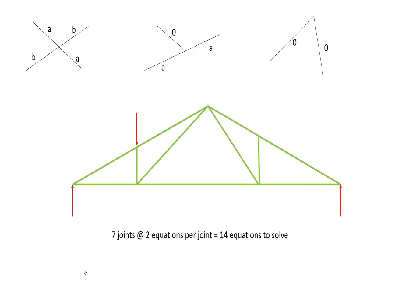Before we get started, I'd like to think about how difficult it would be to solve this by the method of joints. If you count, we have seven joints in this truss. There are two equations of equilibrium for each joint, so we would have to solve 14 equations. This is doable, but if we can simplify the work, why wouldn't we?